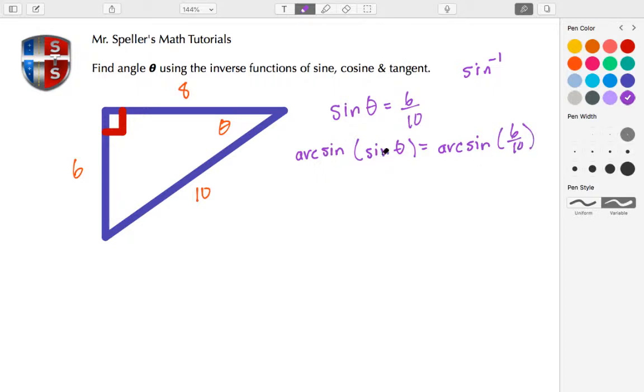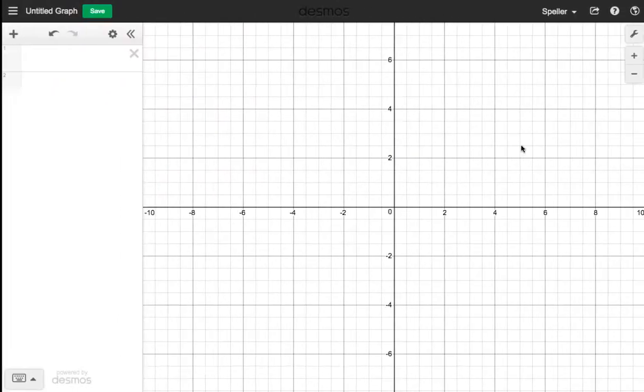In doing so, arc sine and sine are inverses, so they actually undo each other. We're left just here with theta, and then we're going to take the arc sine of six tenths. Let's go to Desmos to show that.